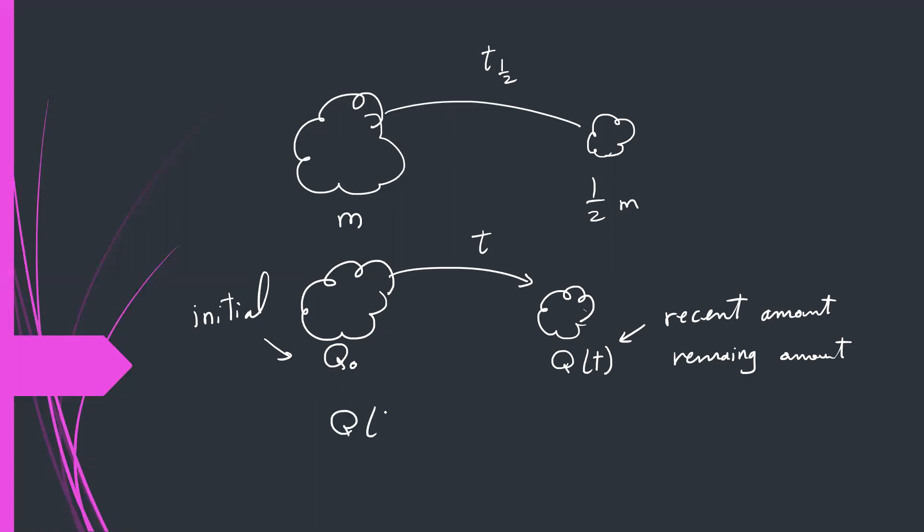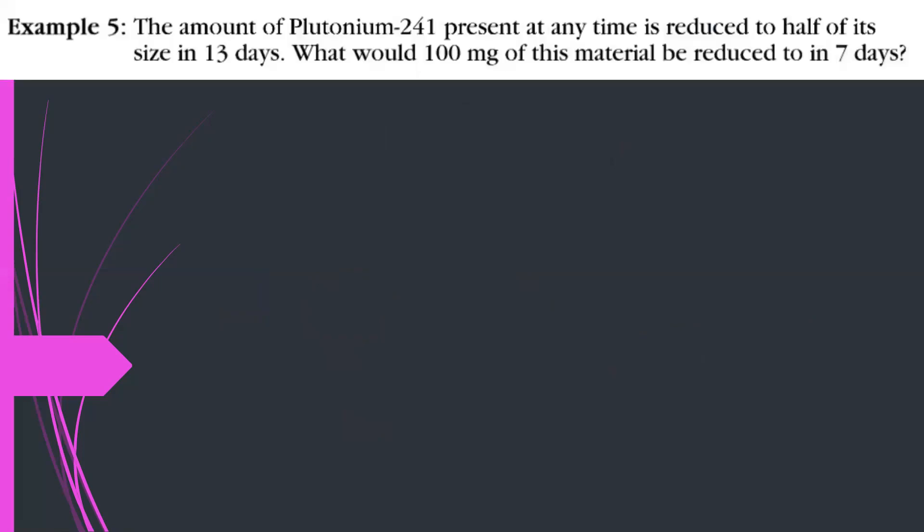This relation is Q(t) equals Q naught, the initial amount, e to the negative rt. r is called the constant of decay. Usually, this function is a decreasing function, starting from the biggest number here, the initial amount, and becomes smaller and smaller. Let's solve some questions to show you how you can deal with this type of questions.